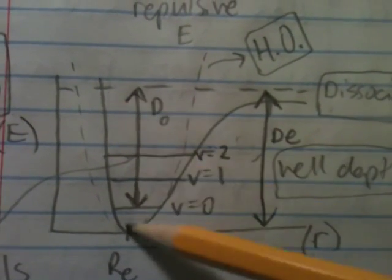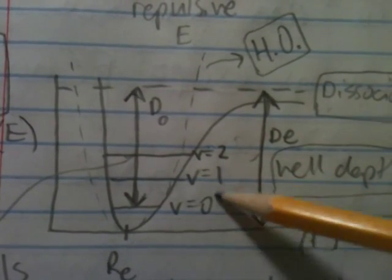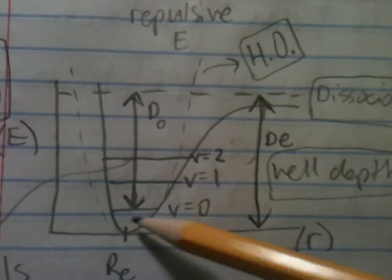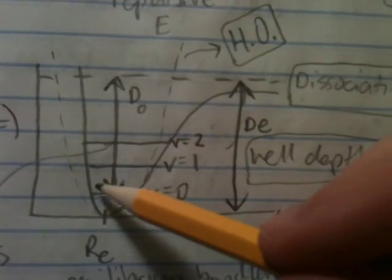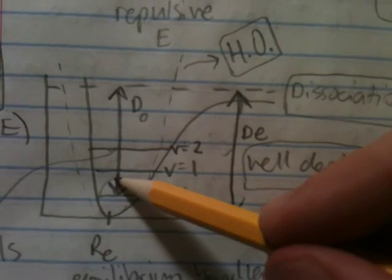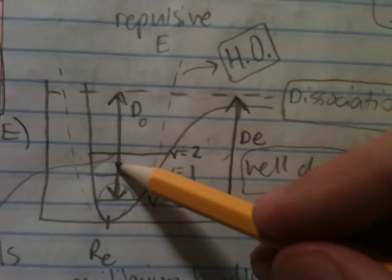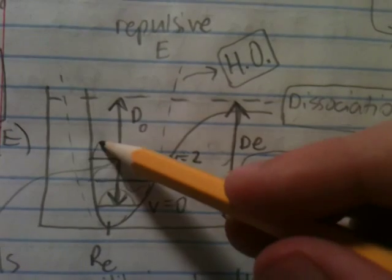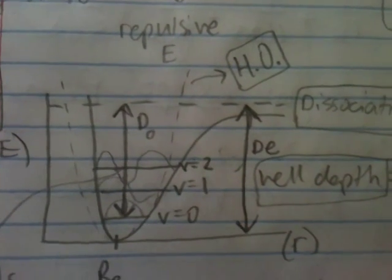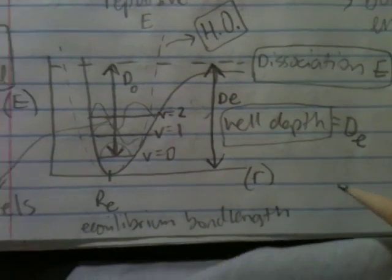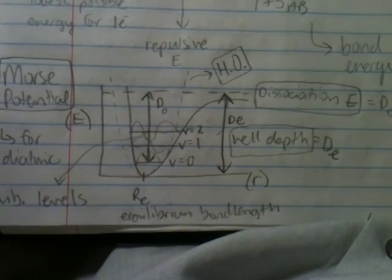Within this electronic state, you have vibrational levels, 0, 1, and 2. If you remember, these are, if you remember from the harmonic oscillator properties, you have something that looks like this. Then you have two main energies here.